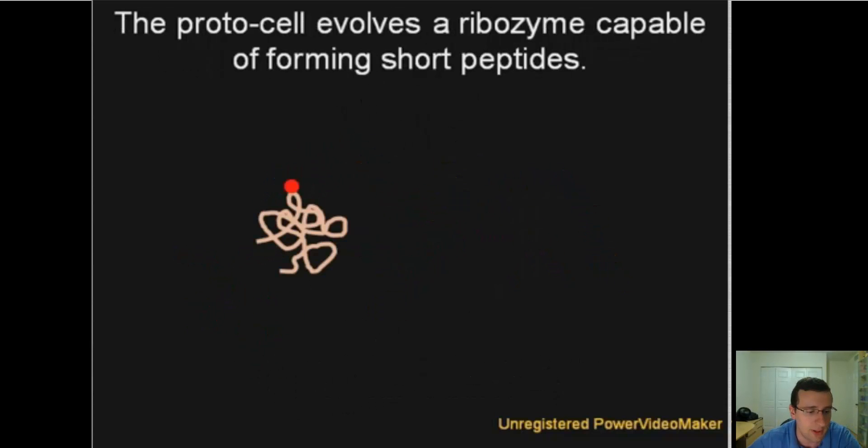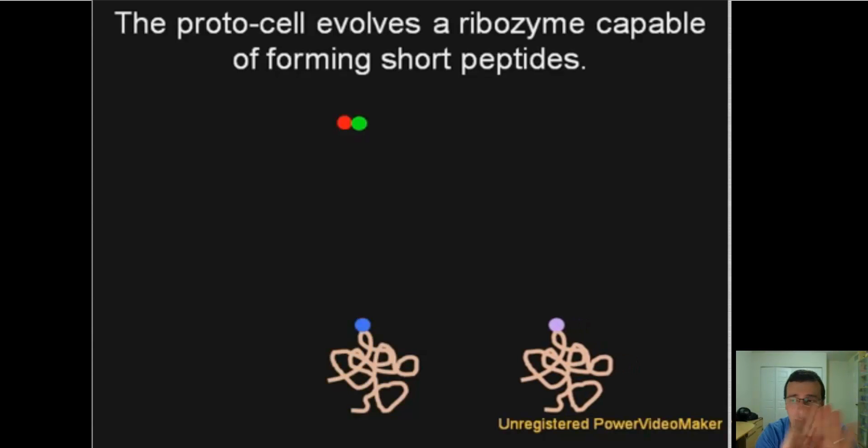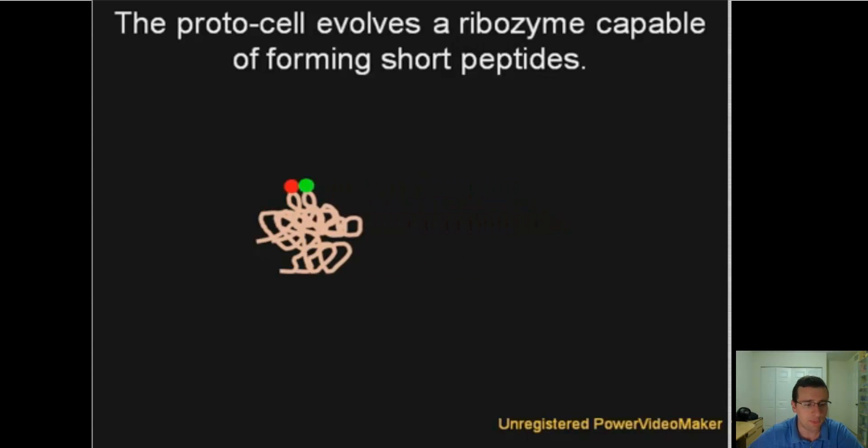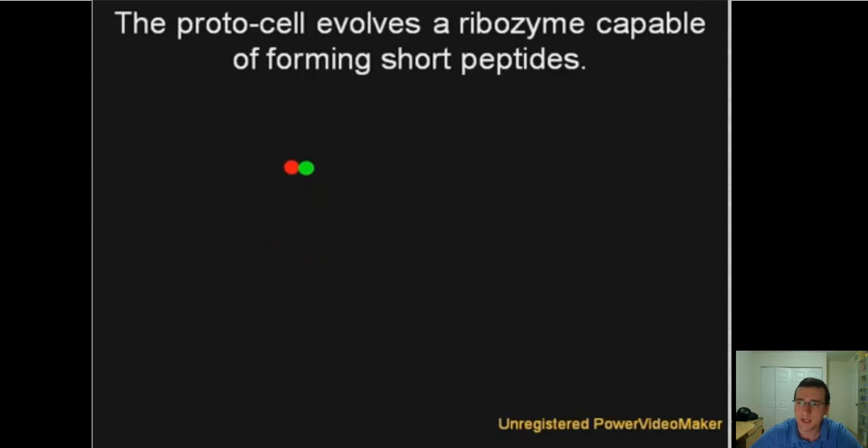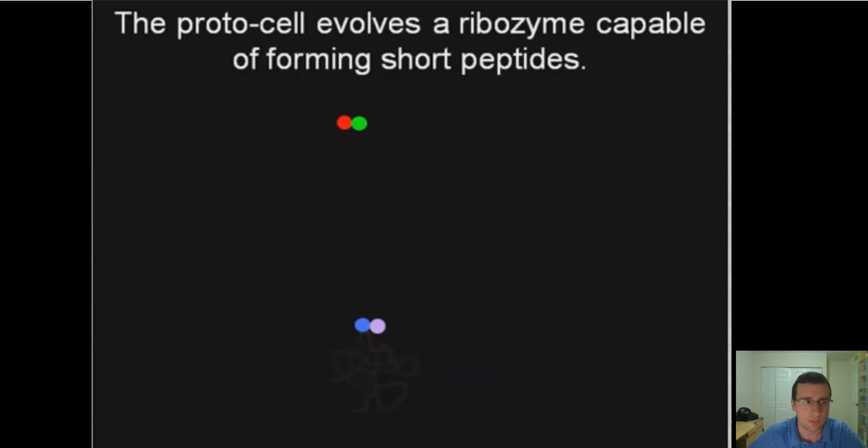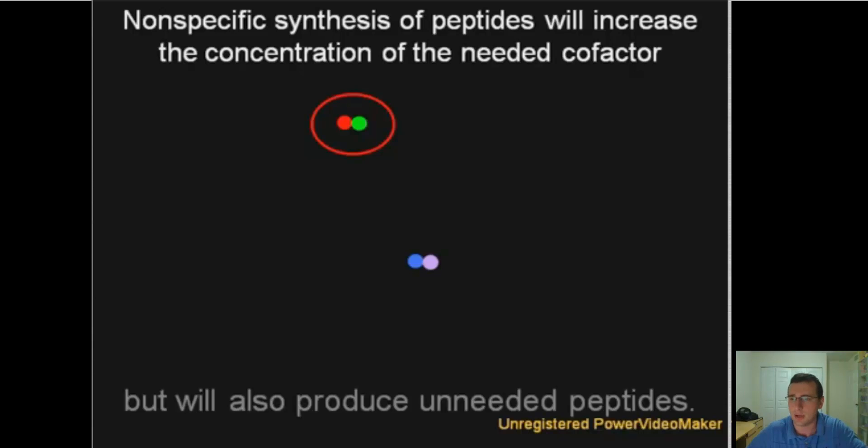We also talked about in the other video that ribozymes can act as templates or enzymes to form these peptides. So it's ribozymes themselves which could aid the formation of links between two amino acids and thus the formation of peptide bonds or those chains. But of course, such systems would also create several other types of chains. So the non-specific synthesis of peptides would increase the concentration of the cofactors needed by the other ribozymes.